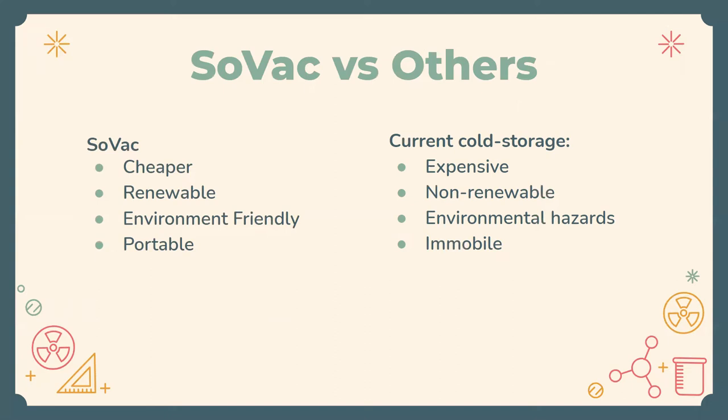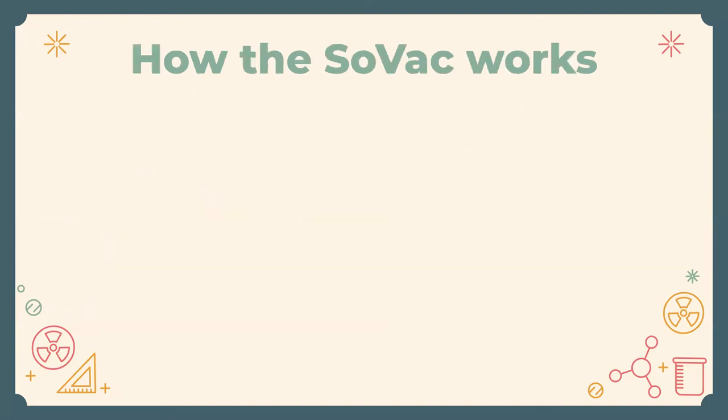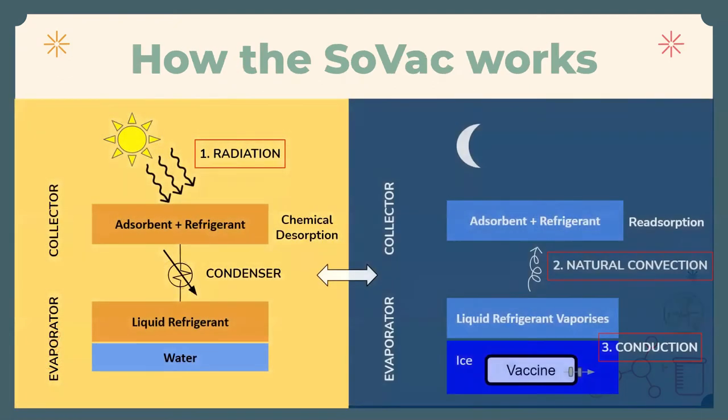SOVAC is built trying to keep it cheap, renewable, and environment-friendly. We also realize that there are several rural areas in India where vaccines need to be delivered, and thus portability has been kept in mind.